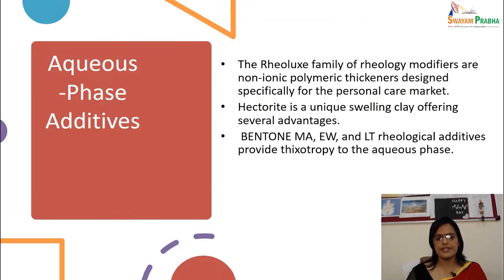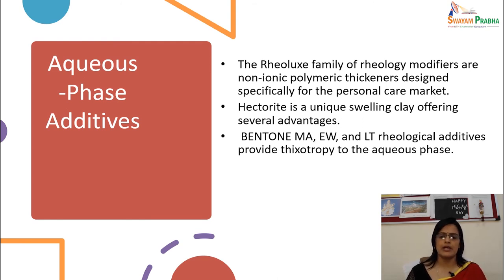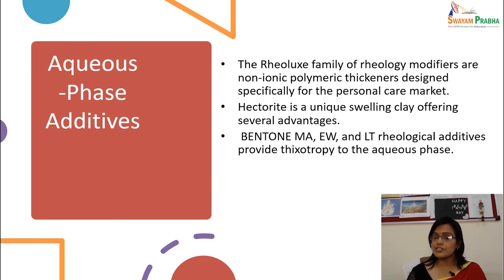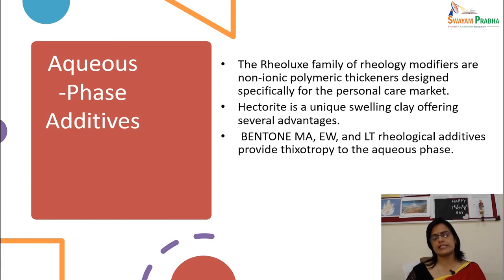The RHEOLATE family of rheology modifiers are non-ionic polymer thickeners designed specifically for the personal care market. Hectorite is a unique swelling clay offering several advantages. Bentonite MA, EW, and LT rheological additives provide thixotropy to the aqueous phase. Aqueous phase additives can be easily mixed with an aqueous vehicle like water.